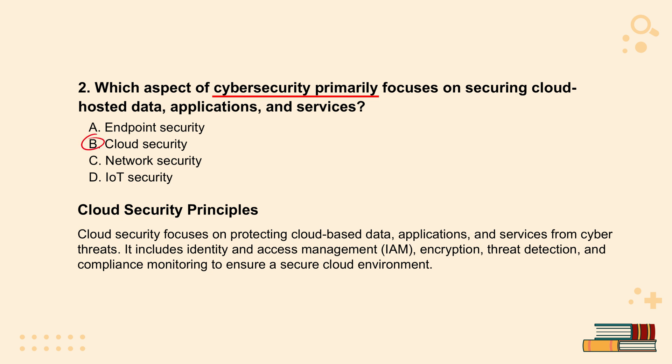Encryption is huge, but it's not one size fits all. In the cloud, you're likely dealing with both symmetric and asymmetric encryption. Symmetric is faster and uses the same key to lock and unlock, but if that key gets compromised, you're in trouble. Asymmetric is more secure with its two separate keys — the public and private ones — but it's slower and uses more resources. It's a trade-off; it's all about finding that balance.